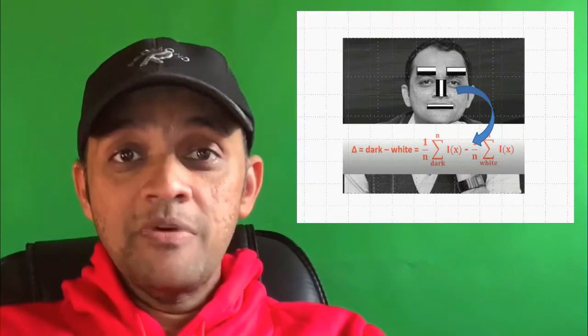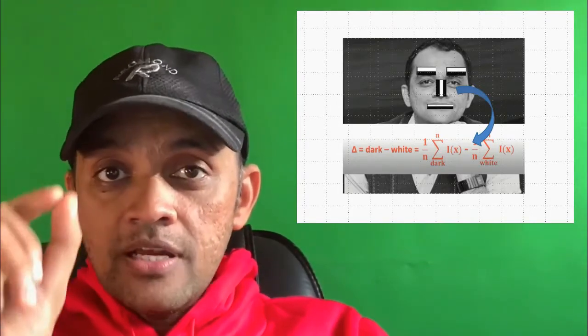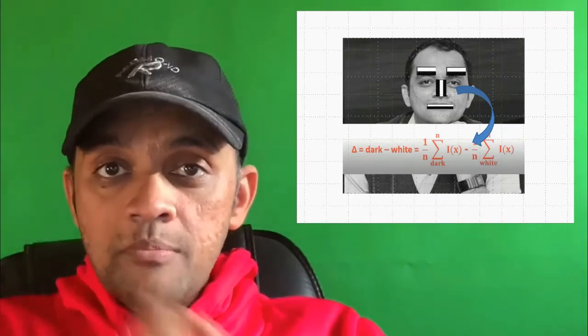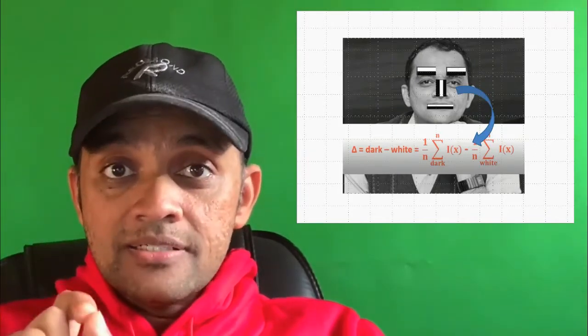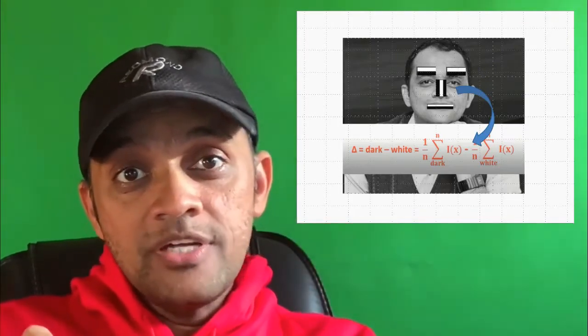He said that you can actually drill down those features into one number. And then later, if we are trying to apply this to a different picture, if it gets closer to the original number, then the chances are that this picture is quite closely resembling that picture.